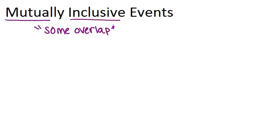Two events are mutually inclusive if it's possible for both events to happen at the same time. They won't necessarily always happen at the same time, but there's some overlap.